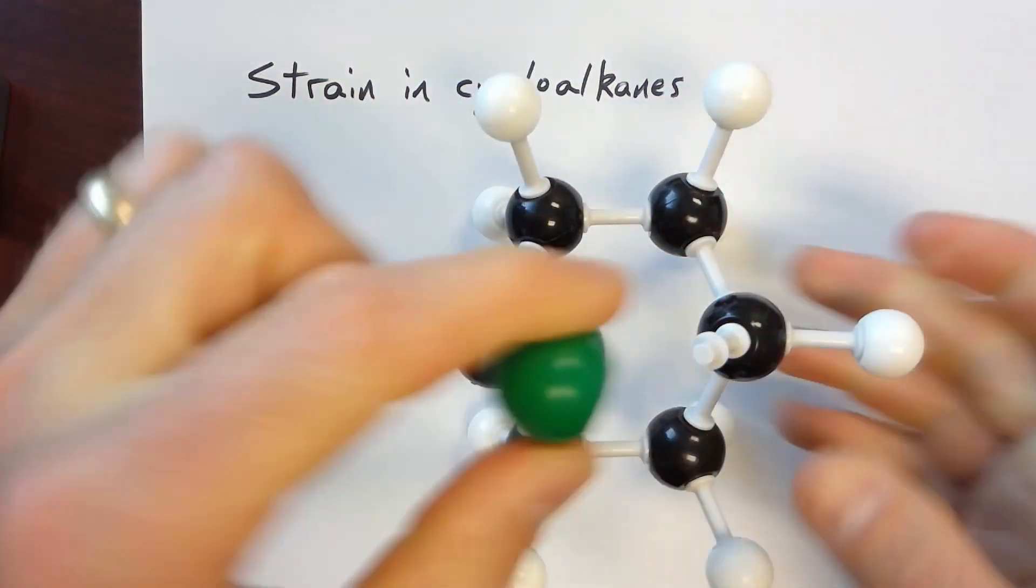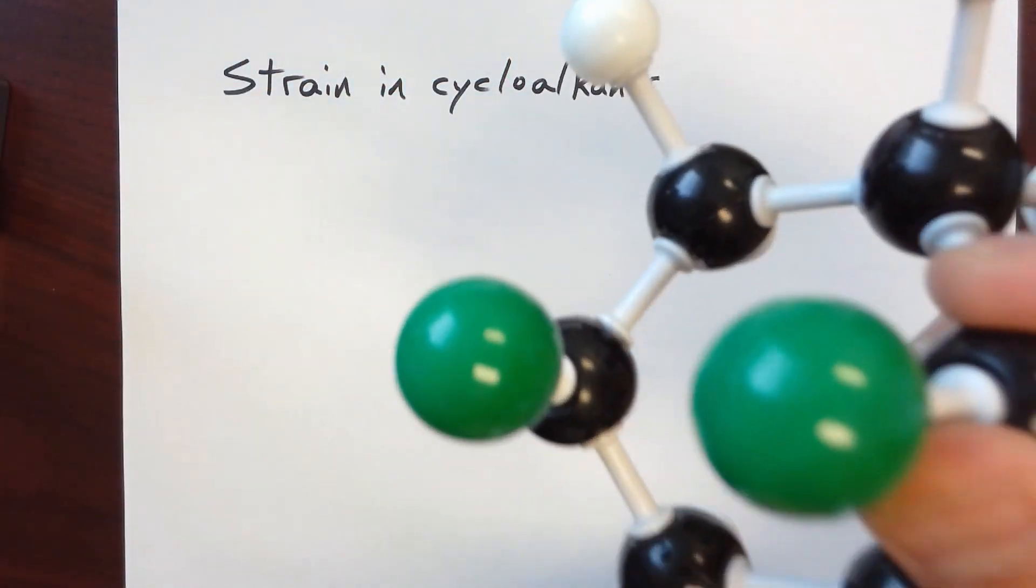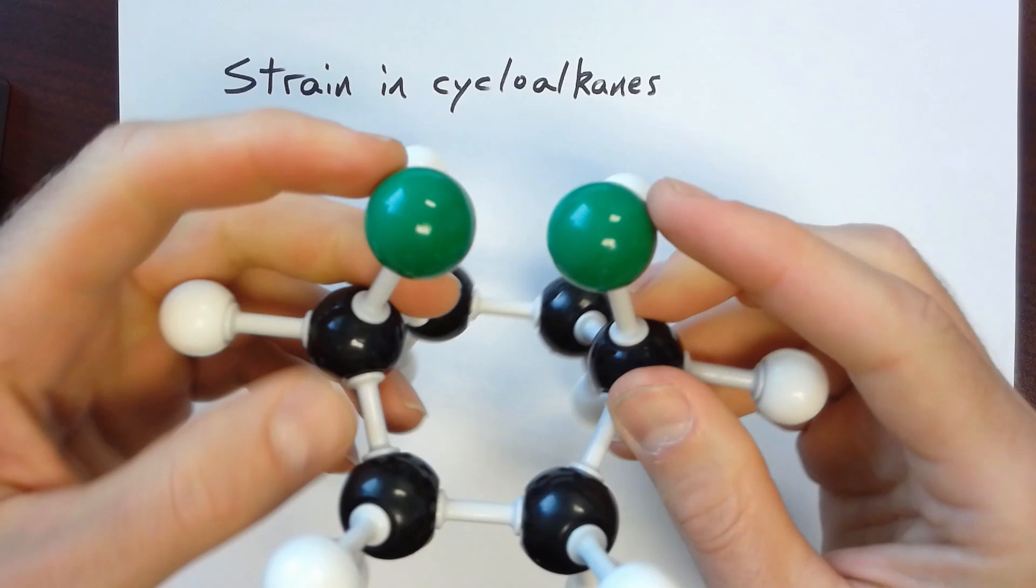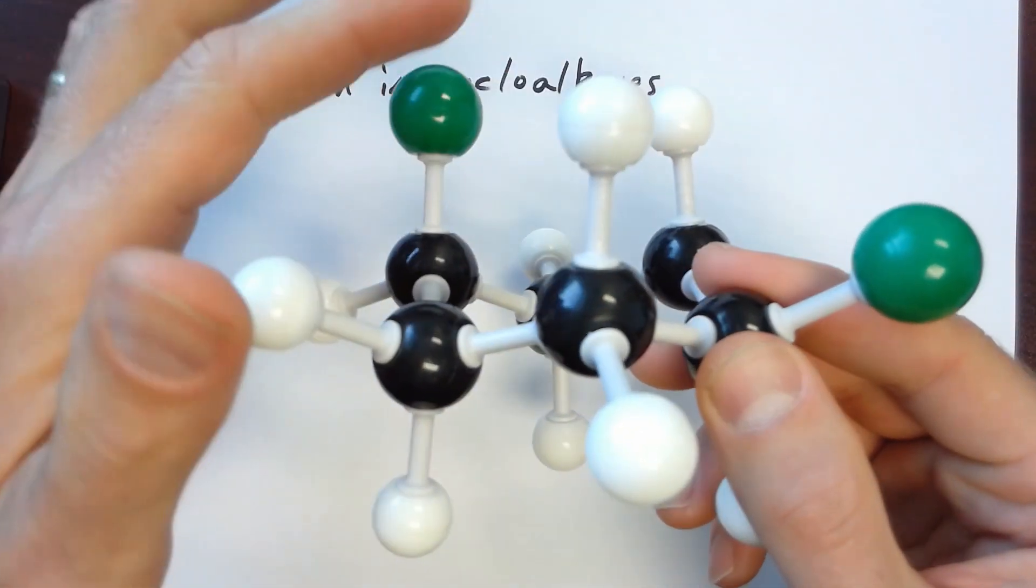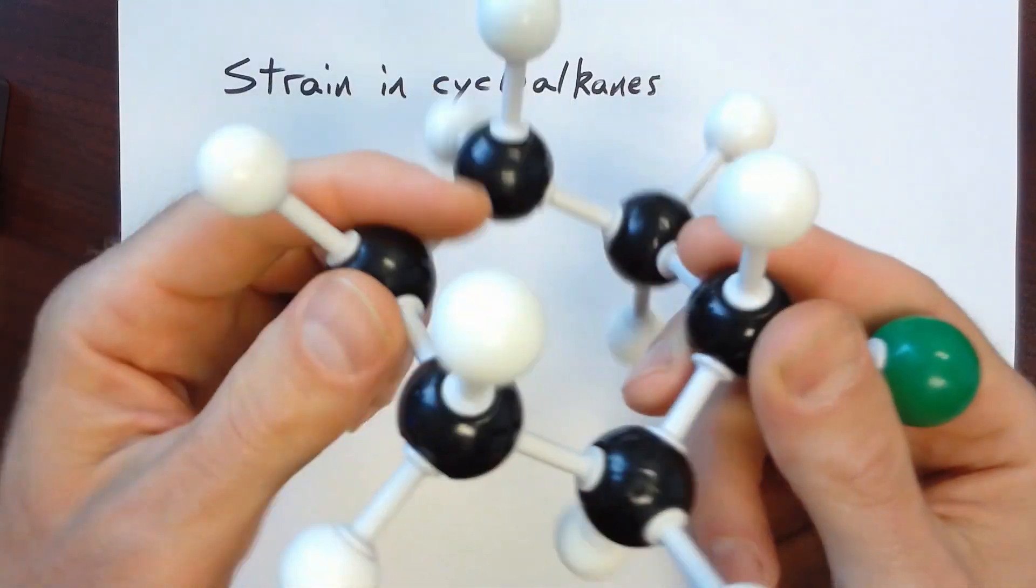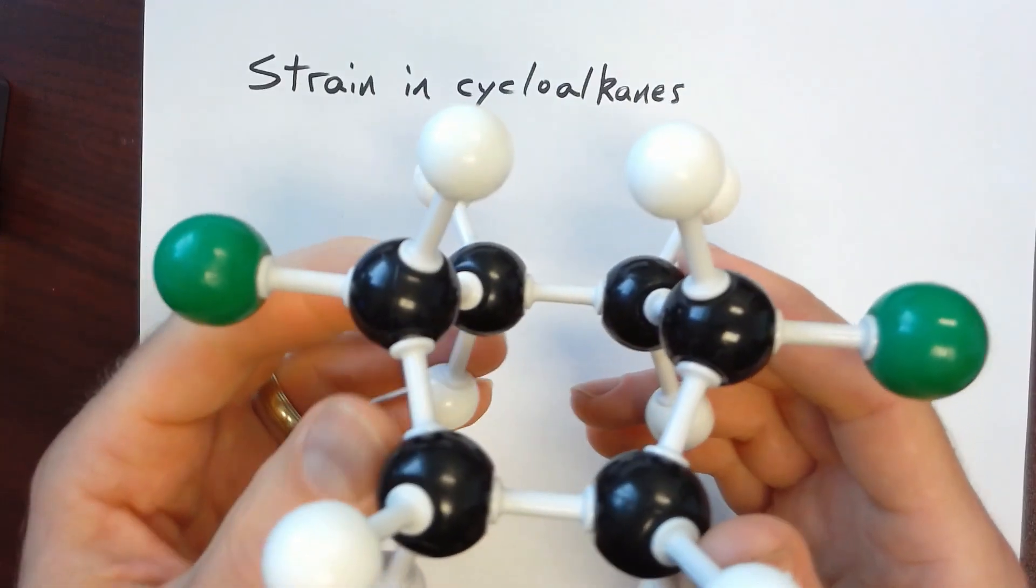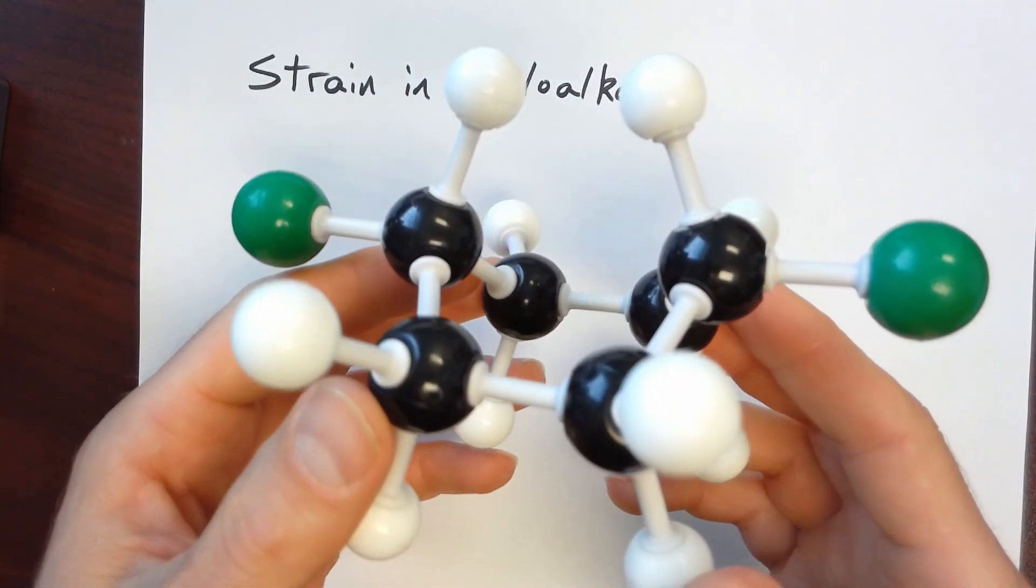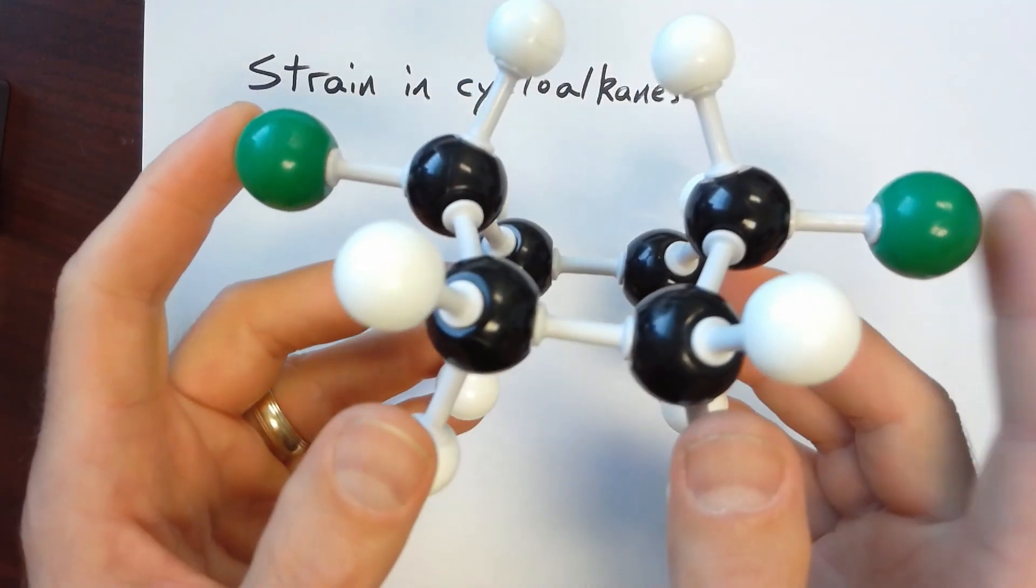For example, if I have a cis-1,4-disubstituted cyclohexane, and these are, say, tert-butyl groups, they take up so much space that the 1-3-diaxial interactions are very unstable. And so something like cis-1,4-di-tert-butyl-cyclohexane would actually exist in the boat conformation.